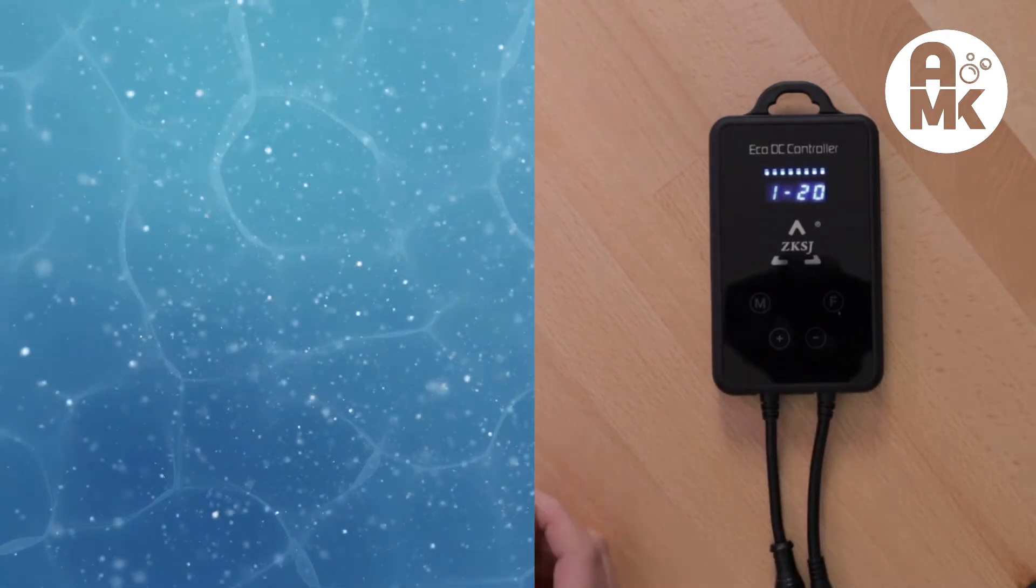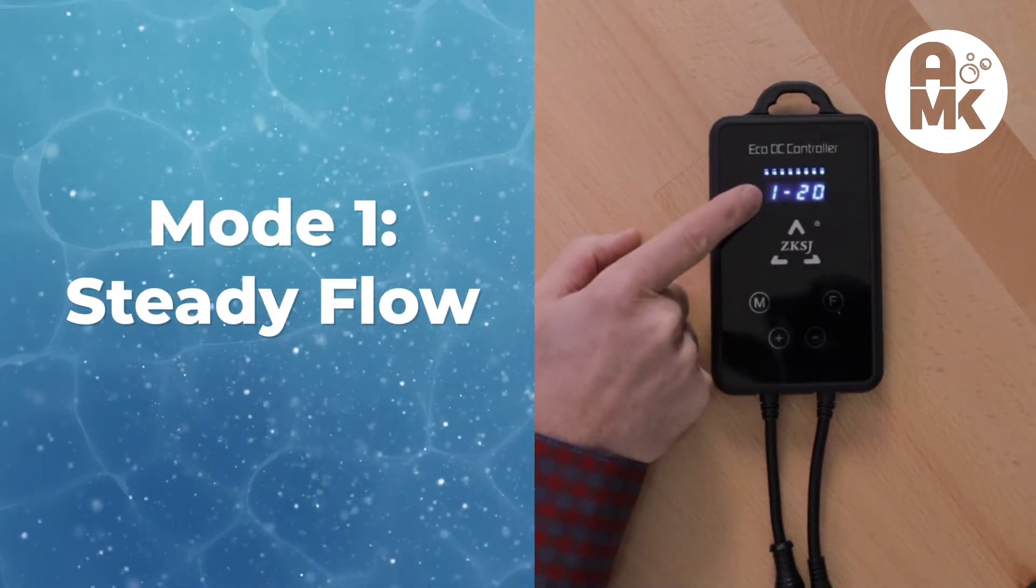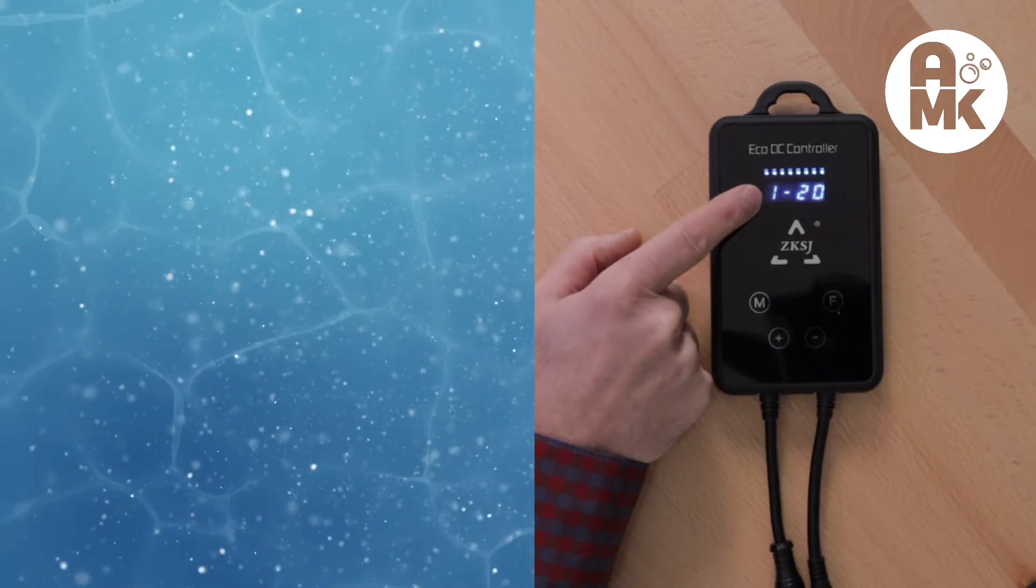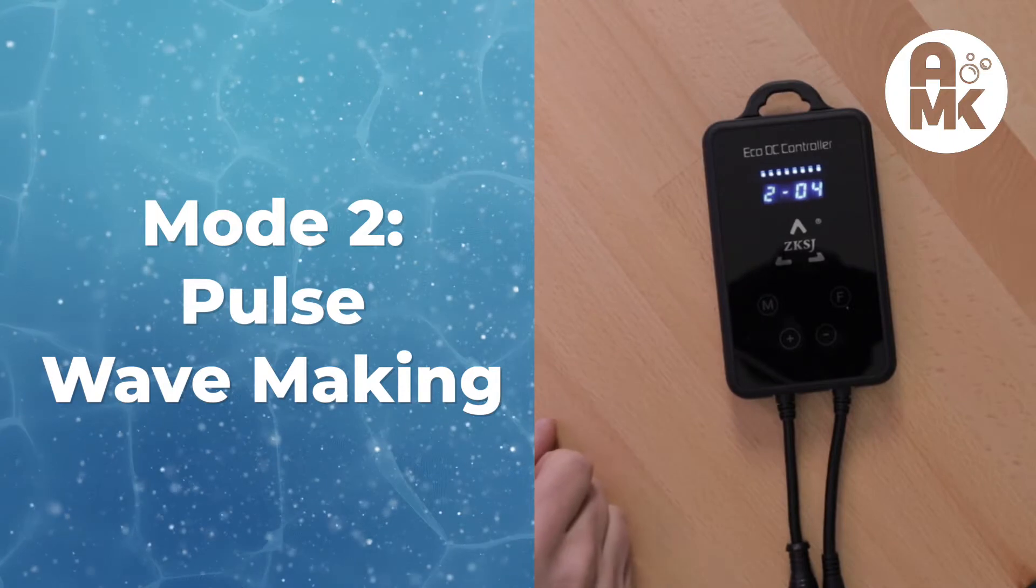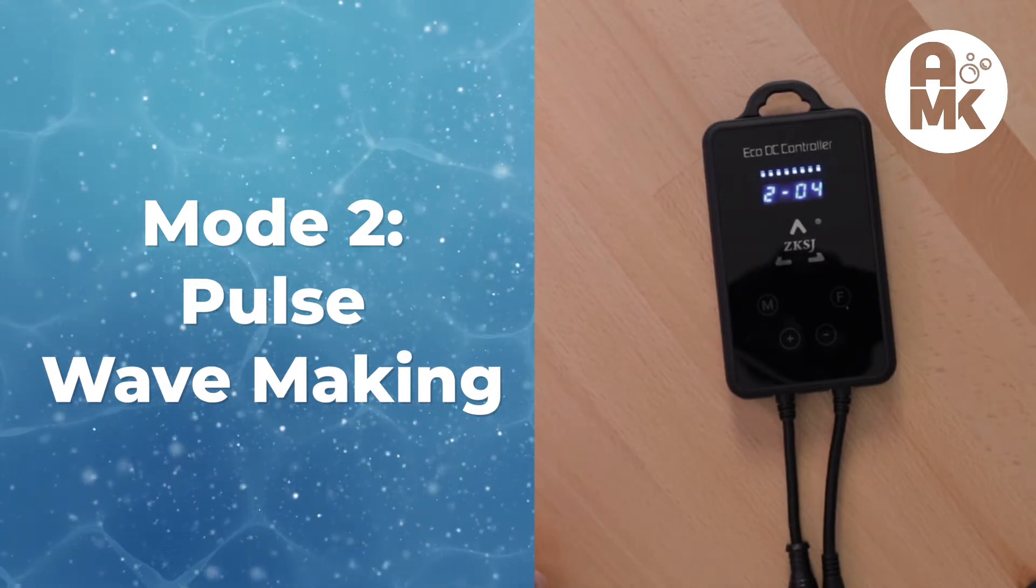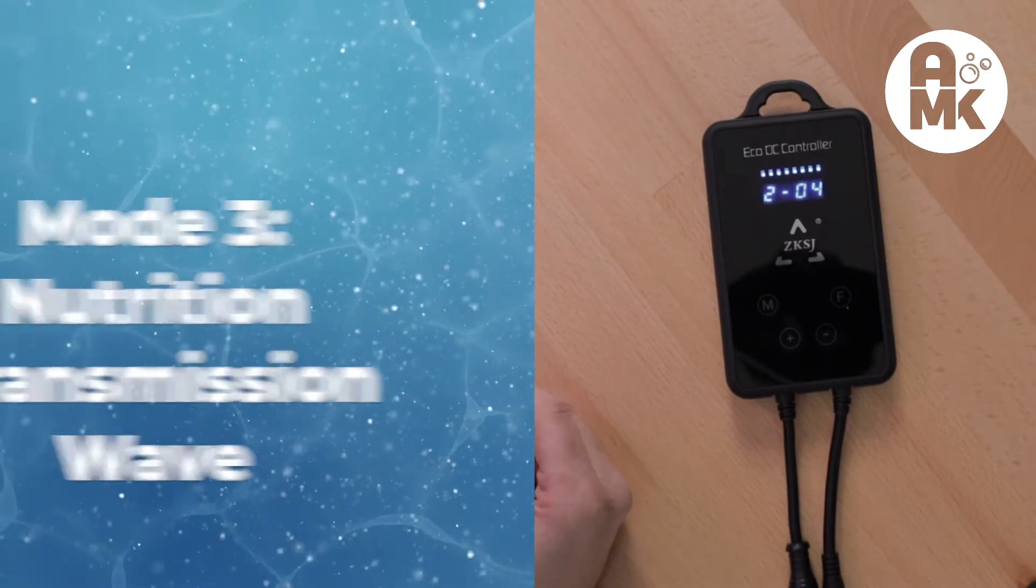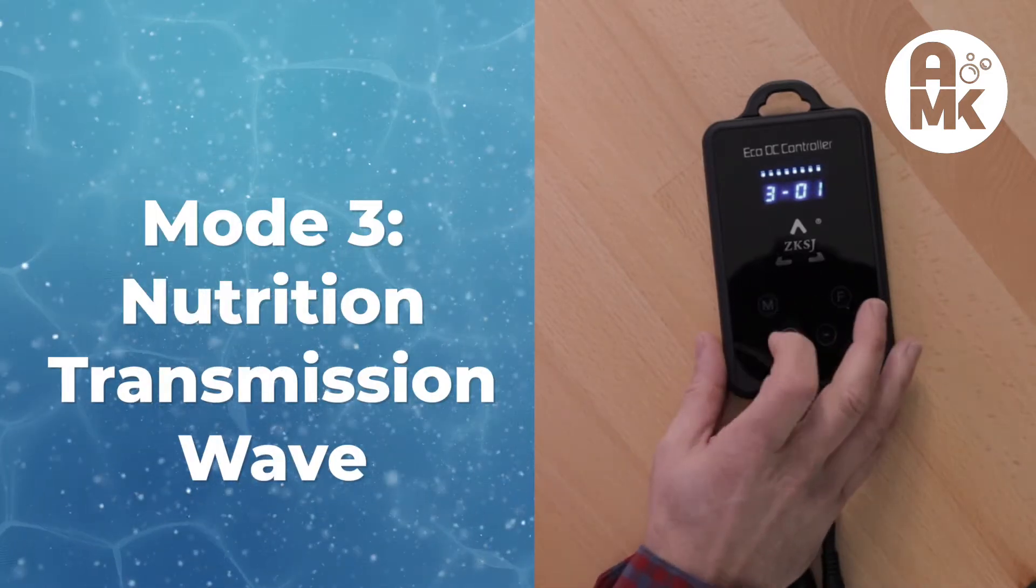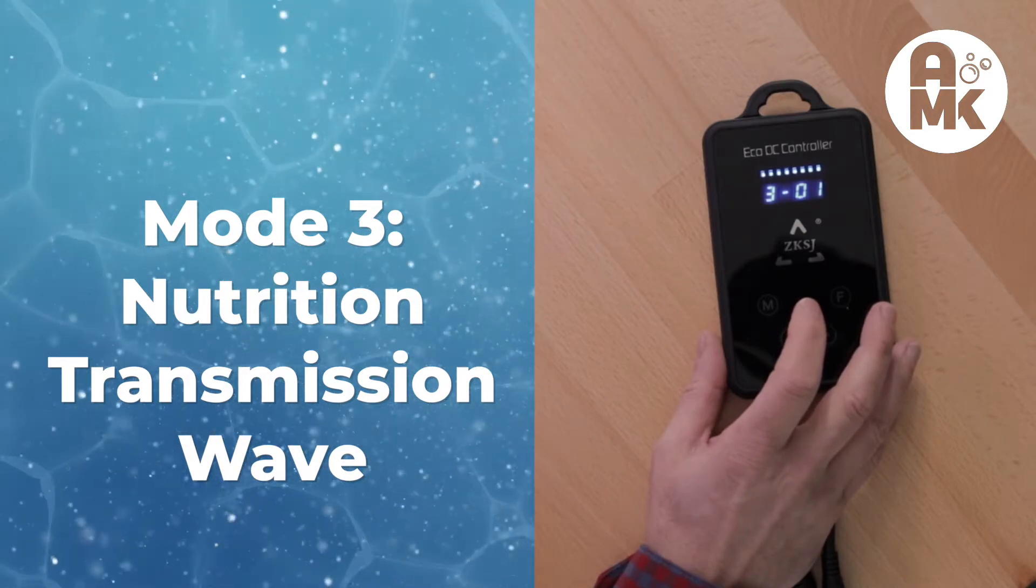it'll be in the steady mode one. Number one is indication that it is your mode one flow. When you hit the mode button, you will get mode two. This is your wave mode. So it means pulse wave making mode. And then if you hit the M again, three, that is your nutrition mode or feed mode as we call it.